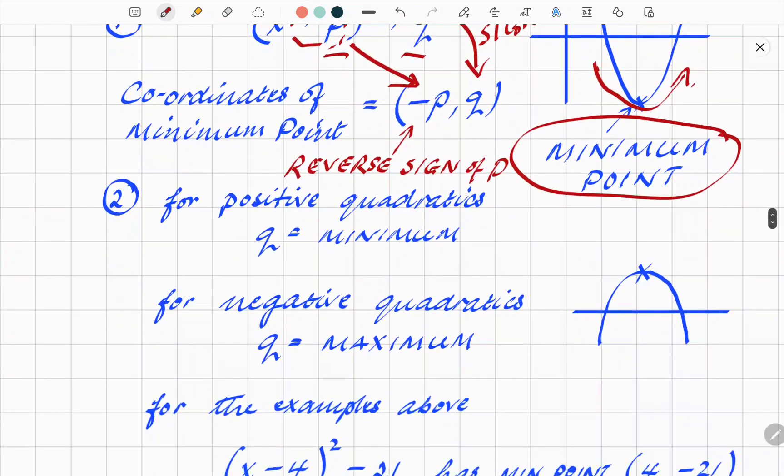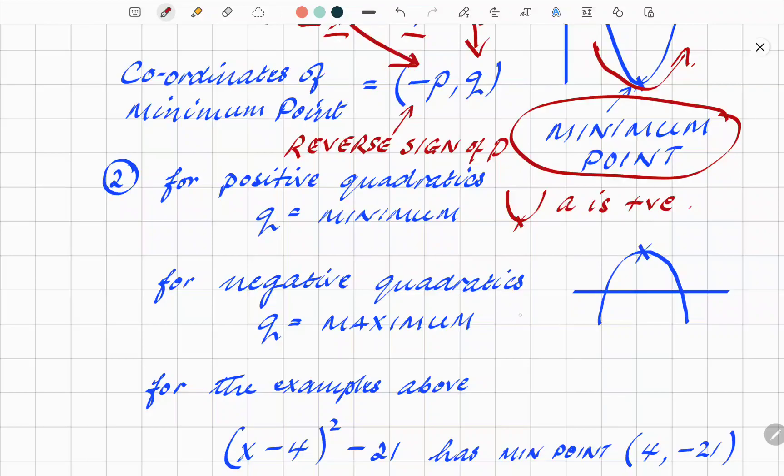So the p and q will give us the coordinates of the minimum point. For positive quadratics, U-shaped ones where a is a positive number, it'll give us the minimum. But for negative quadratics, where a is negative, then it's an upside-down quadratic, not the standard U-shape. And in that case, q will give us the maximum value, the highest point. So bear that in mind. Q tells us the lowest point or the highest point of the quadratic, depending on its shape.